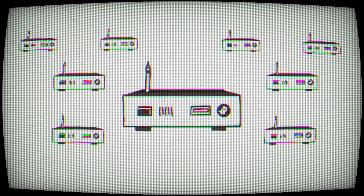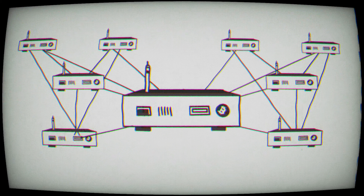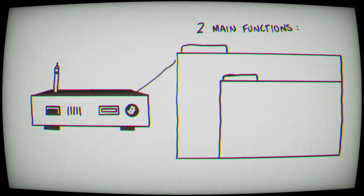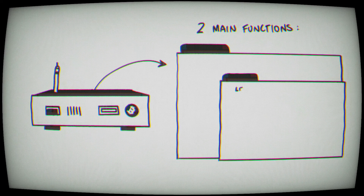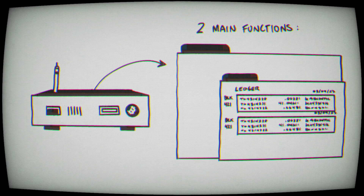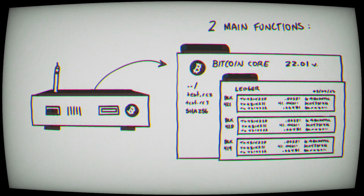A Bitcoin node is a computer running Bitcoin software, and most importantly, it is a participant in the network that is formed by other nodes. It's what makes up the decentralized nature of Bitcoin. The two functions it serves are to keep track of Bitcoin's ledger — who all the holders are, all of the transactions — and second, to store the Bitcoin rule set, the software, and how it can be transmitted.